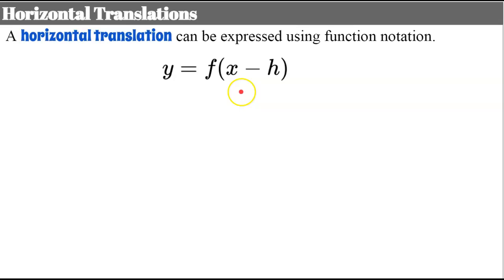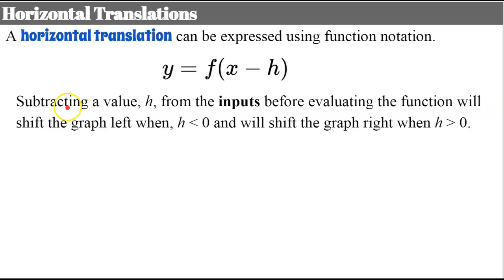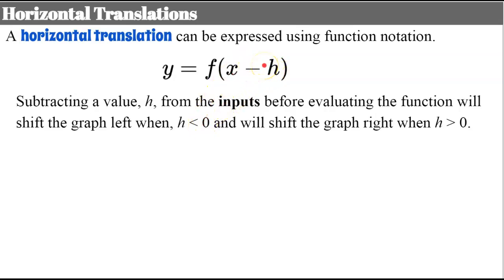You'll learn more about H when we talk about absolute value functions in a few lessons. Subtracting a value H from the inputs will shift the graph left when H is less than zero, and right when H is greater than zero. When H is less than zero, H is negative, so subtracting a negative means adding the opposite — this is counterintuitive, so we'll need to practice it.